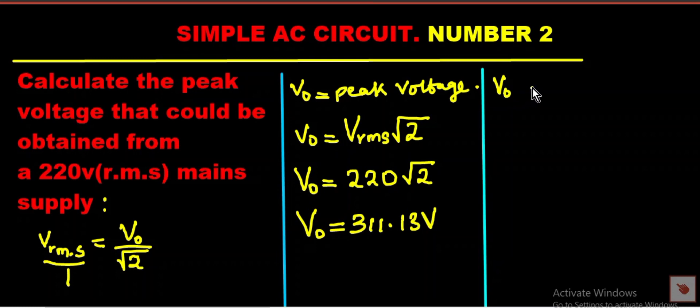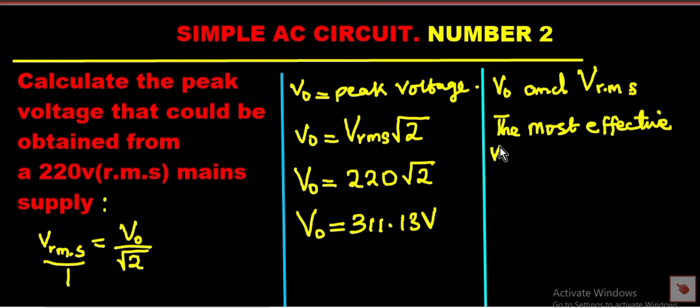Alright, let's do a few other things. You also remember that V naught and V RMS, they are not the same, there are two different voltages. I finished solving the calculation, but I want to throw more light. So the most effective voltage amongst the peak voltage and RMS value of the voltage is V RMS, the effective voltage. V naught is giving us the peak voltage.